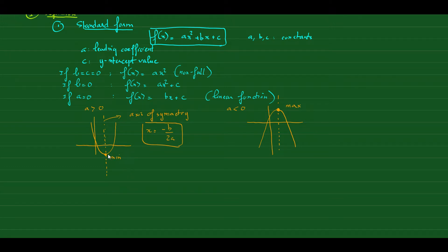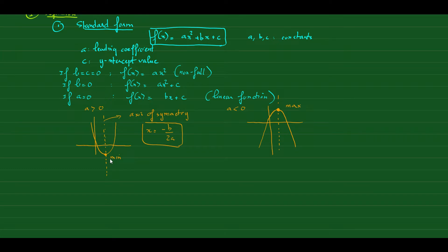Now we know the minimum or maximum point exists. To find the coordinate of this point, we use x = −b/(2a) as the x-component. Then to get the y-component, we calculate f(−b/(2a)). So the coordinate of the vertex — the maximum or minimum point — will be (−b/(2a), f(−b/(2a))). Whether it is a maximum or minimum depends on whether the parabola is opening down or opening up.